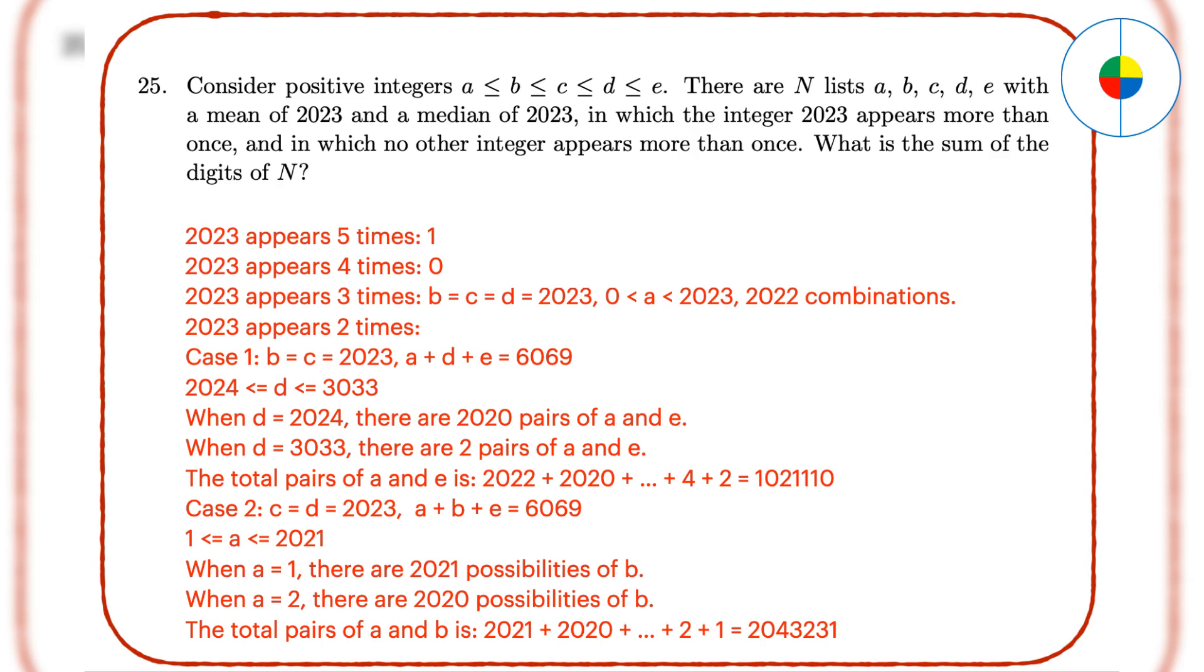Question 25 - This is a very complicated question. You need to consider all the possible combinations. Since 2023 appears more than once, there are only four possibilities for 2023. It can appear 5, 4, 3, or 2 times. When 2023 appears 5 times, there is only one list. When 2023 appears 4 times, it's not possible since the mean cannot be 2023. When 2023 appears 3 times, A is less than 2023, and E is greater than 2023, there are 2022 choices for A, so there are 2022 lists in this case. When 2023 appears 2 times, you can assume B and C are 2023, or C and D are 2023, and calculate the different number of lists for those two situations. If you add up all the numbers of lists, the answer for N is 3,066,364, the sum of digits of N is 28.